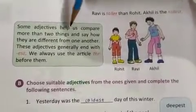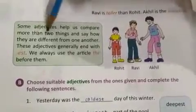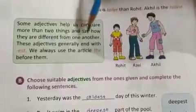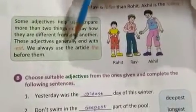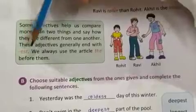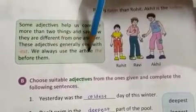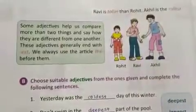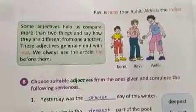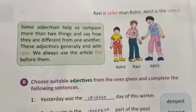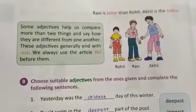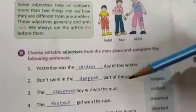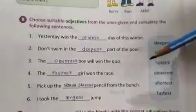Some adjectives help us compare more than two things and say how they are different from one another. These adjectives generally end with EST. We always use the article THE before them. When there is comparison between more than two, EST will come. In such sentences, the article THE will be used before them.